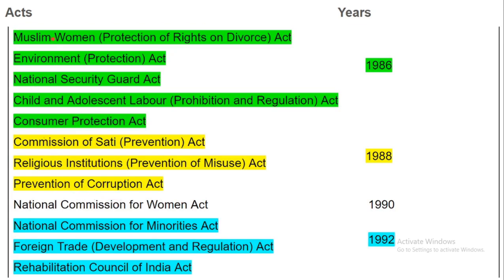Muslim Women Protection of Rights on Divorce Act, Environment Protection Act, National Security Guard Act, Child and Adolescent Labour Prohibition and Regulation Act, and Consumer Protection Act — these five acts passed in 1986. Commission of Sati Prevention Act, Religious Institutions Prevention of Misuse Act and Prevention of Corruption Act — these three acts passed in 1988.